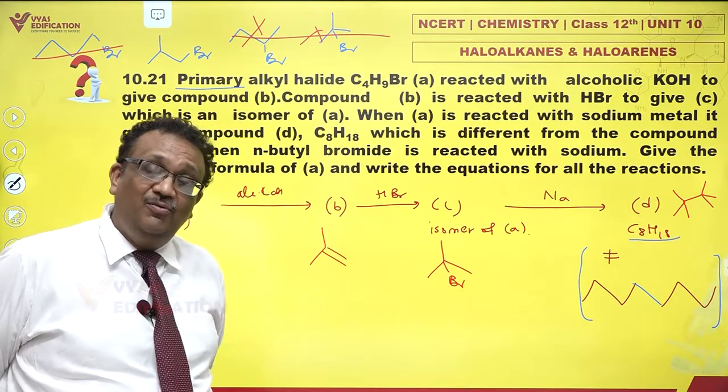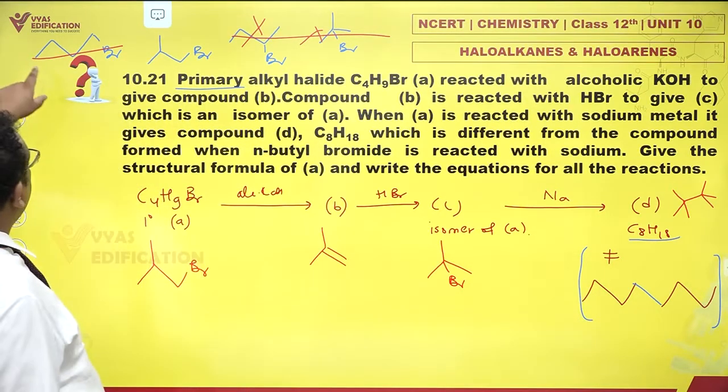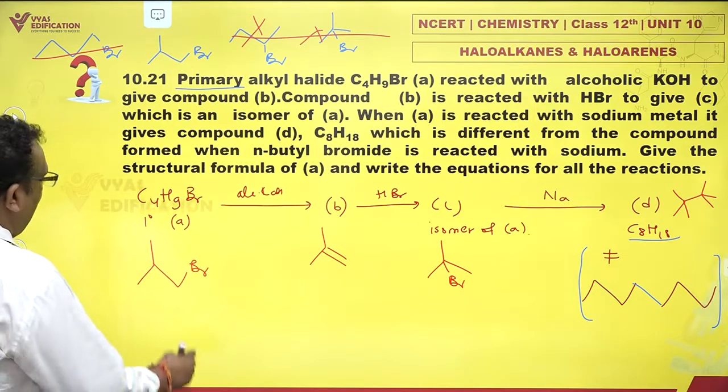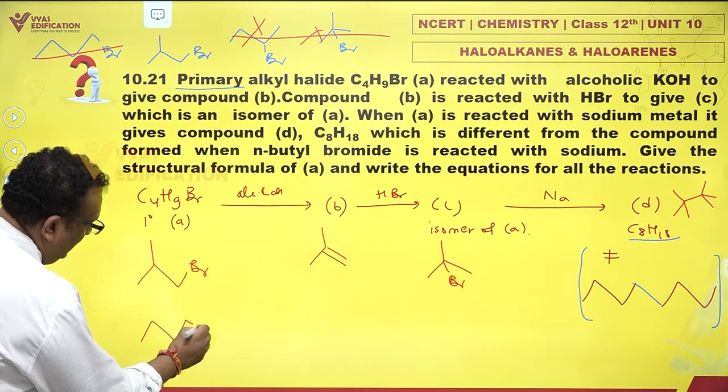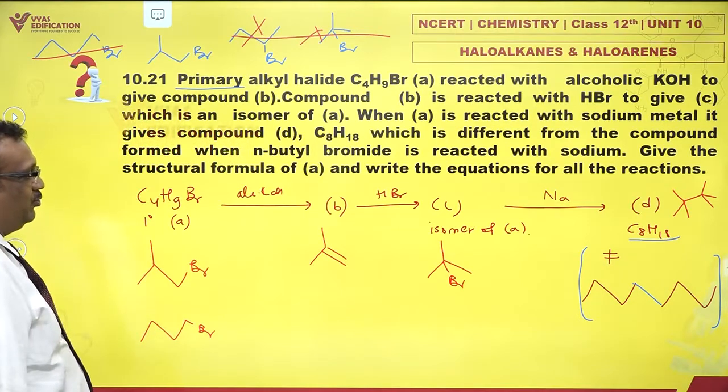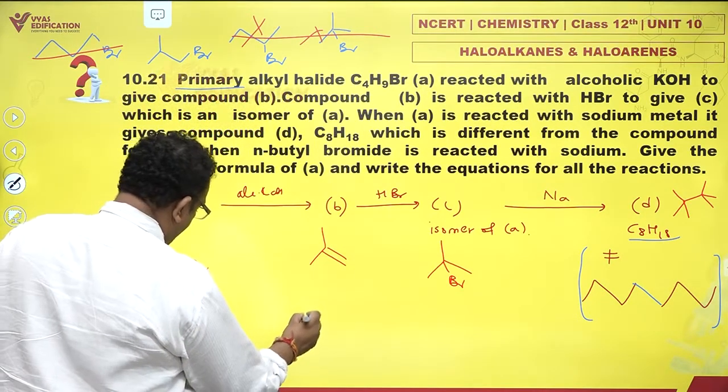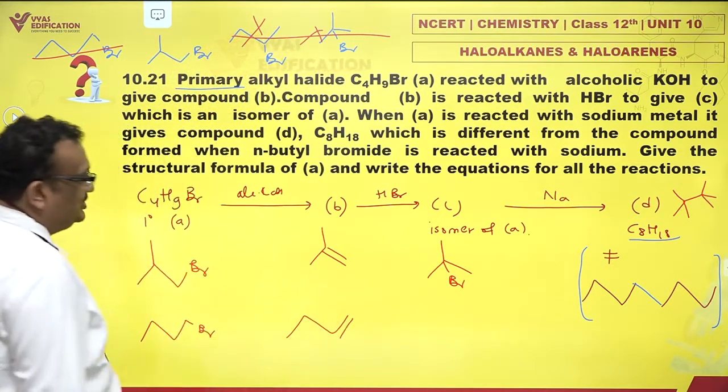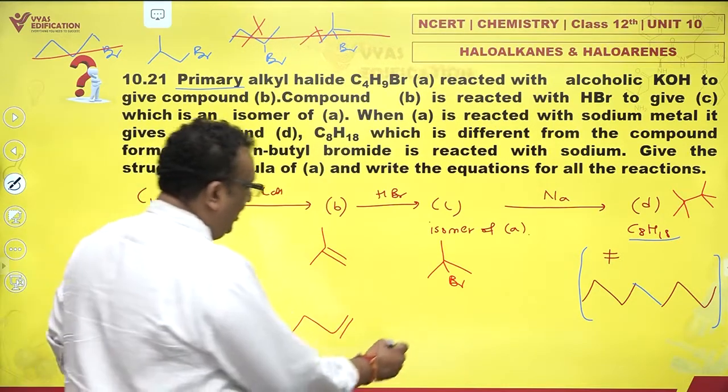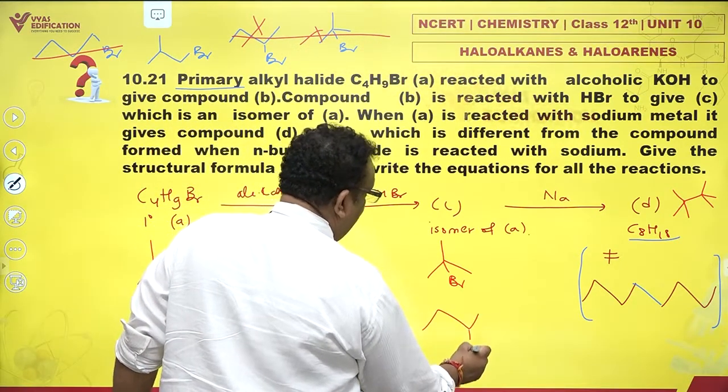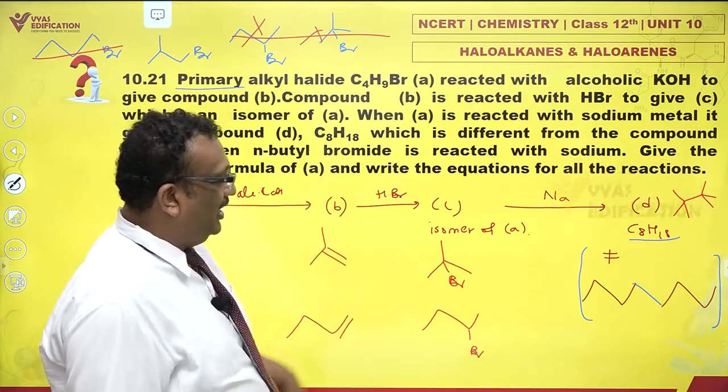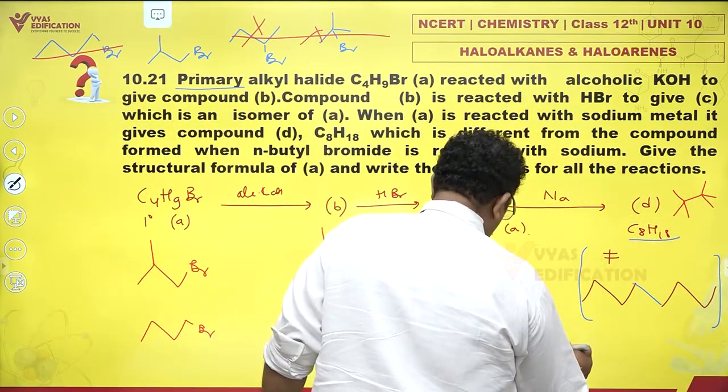Could there be any other option? Well, let me explore this also. Had I had the second primary 1, 1, 2, 3, 4, had this been n-butyl bromide, with alcoholic KOH I would have obtained this butene. With HBr, I would have obtained this secondary butyl bromide. And with sodium, I would have obtained...